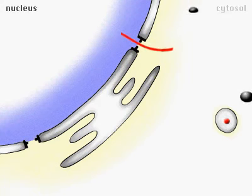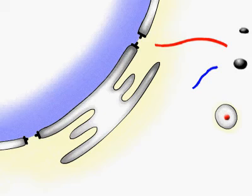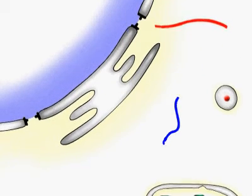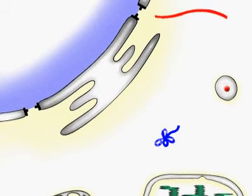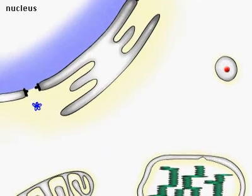All nuclear-encoded mRNAs are transported through nuclear pores and then translated in the cytosol. Special targeting sequences direct the protein to a specific membrane or organelle. For example, nuclear proteins fold in the cytosol and then enter the nucleus through the nuclear pores.